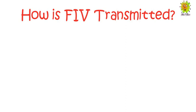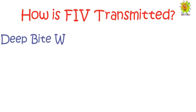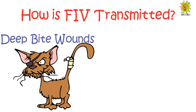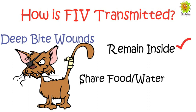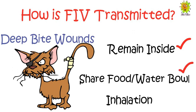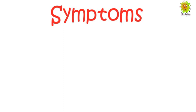Now we see how FIV is transmitted. FIV is transmitted from one cat to another through deep bite wounds. Cats that remain inside the house usually don't get the disease. It is not spread through sharing food or water bowls or inhalation. Mostly aggressive cats that fight in streets carry this disease.